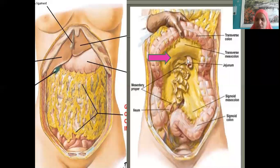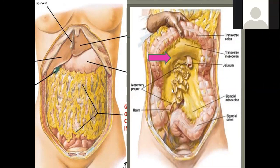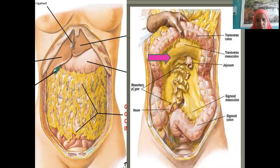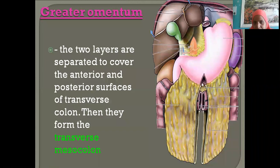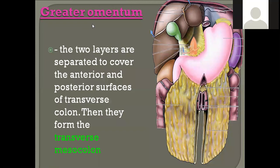The fold of peritoneum covering the small intestine is called the mesentery. The greater curvature of the stomach has the large fold of peritoneum — the greater omentum — which has four layers: the first layer becomes the fourth layer, and the second layer becomes the third layer.